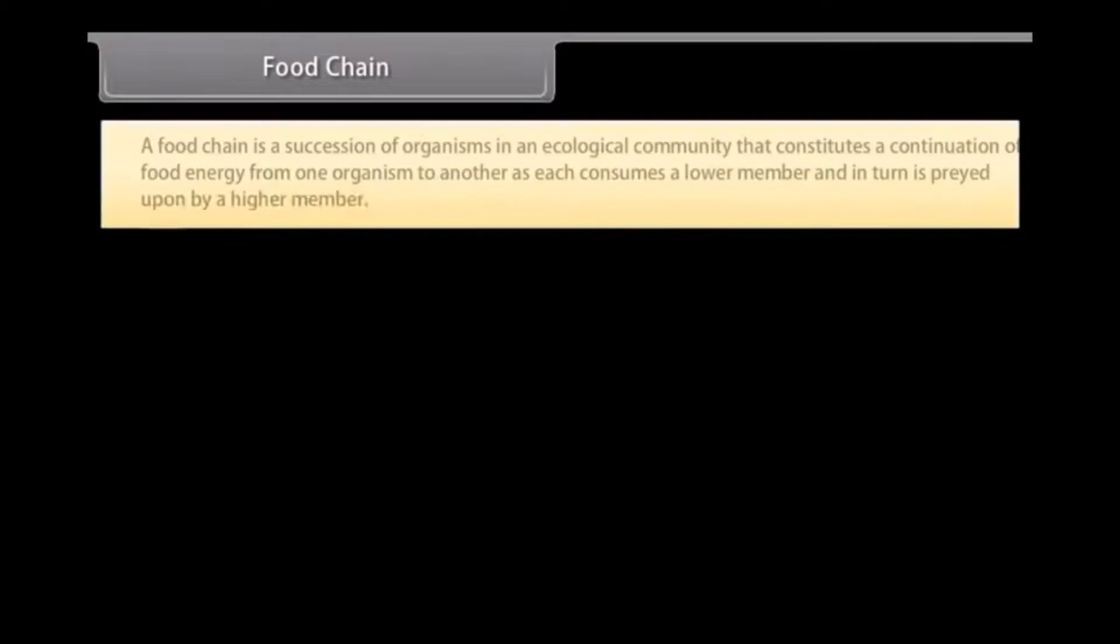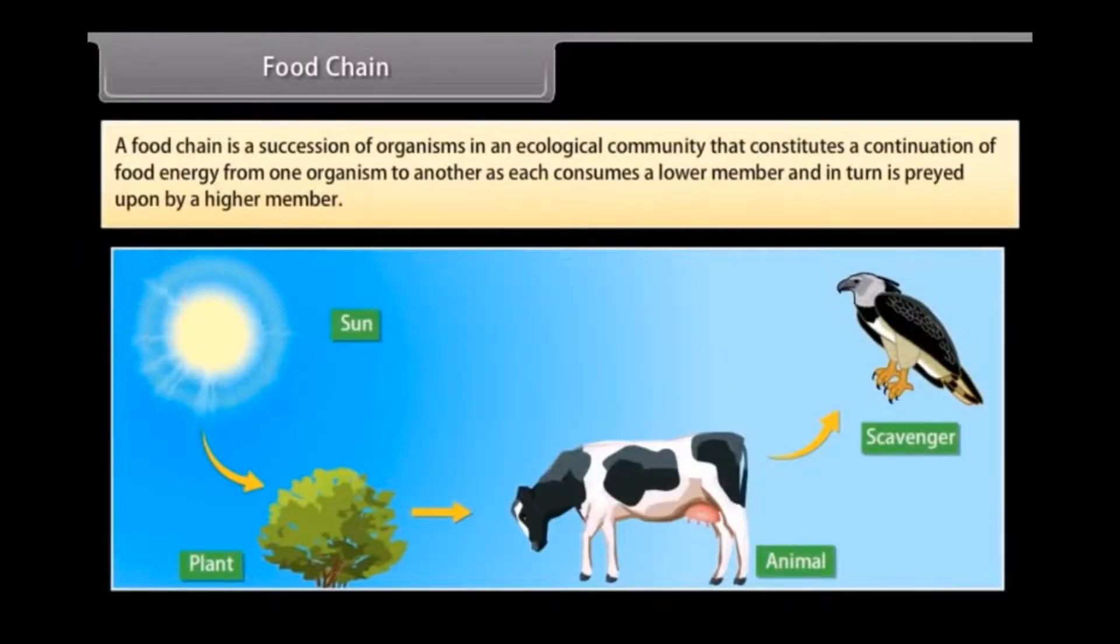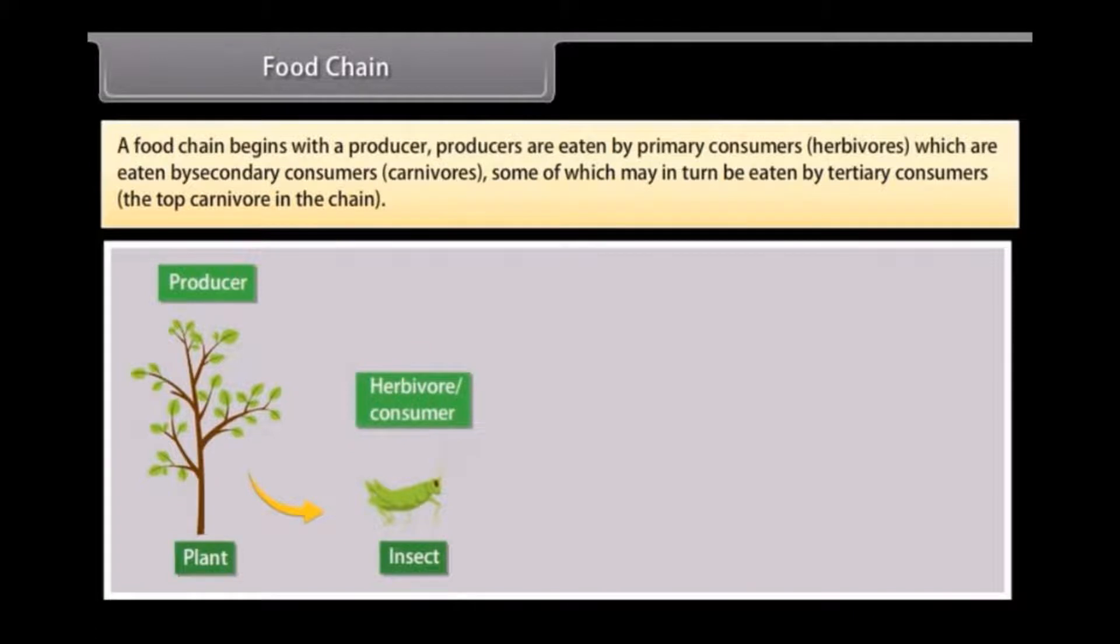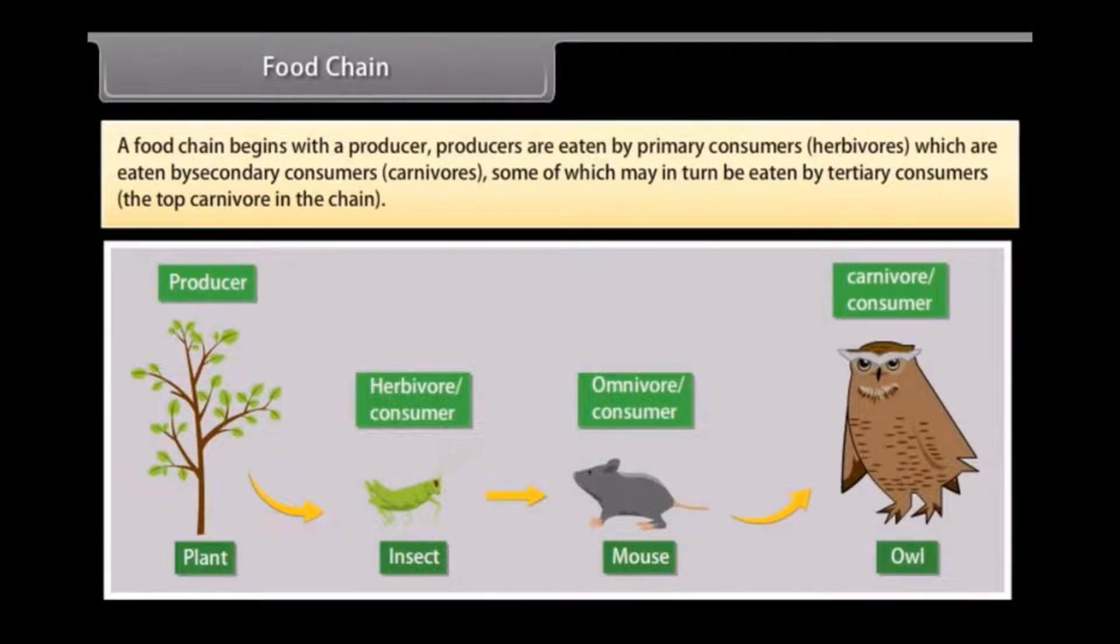Food Chain. A food chain is a succession of organisms in an ecological community that constitutes a contribution of food energy from one organism to another as each consumes a lower member and in turn is preyed upon by a higher member. A food chain begins with a producer. Producers are eaten by primary consumers, herbivores, which are eaten by secondary consumers, carnivores, some of which may in turn be eaten by tertiary consumers, the top carnivore in the chain.